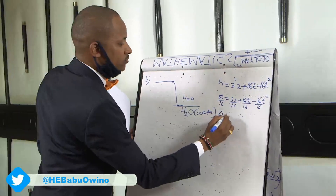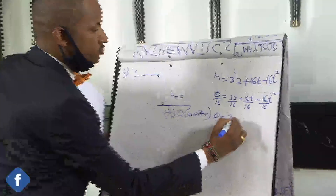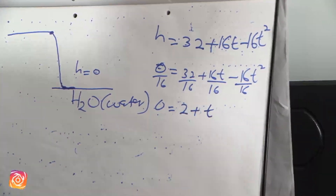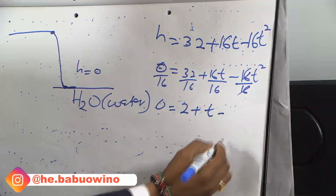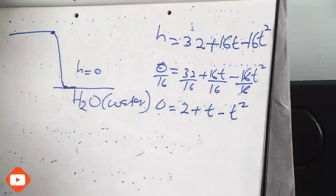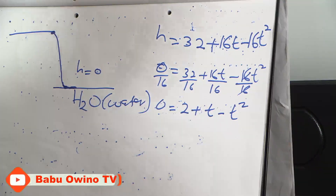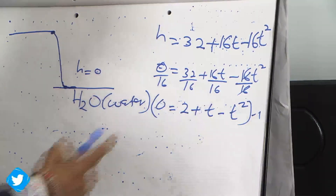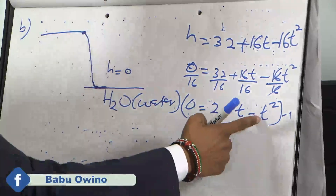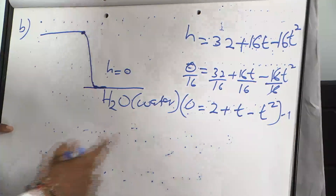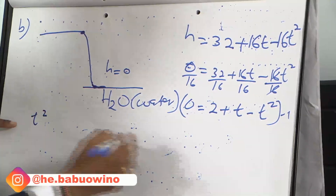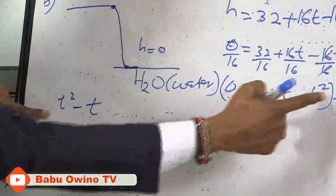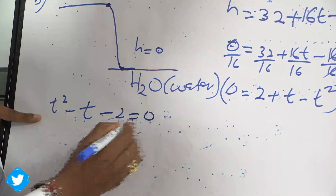0 divided by 16 is 0, 32 divided by 16 is 2, 16t divided by 16 is t, 16t squared divided by 16 is t squared. So from here we multiply all values by negative 1 so that we start our equation with the highest power of t, which is t squared. So when you multiply by negative 1, you get t squared minus t minus 2 equals 0.